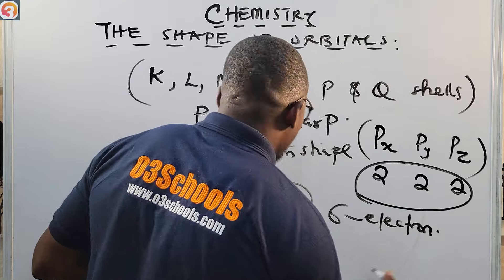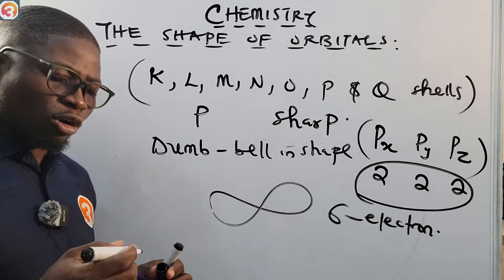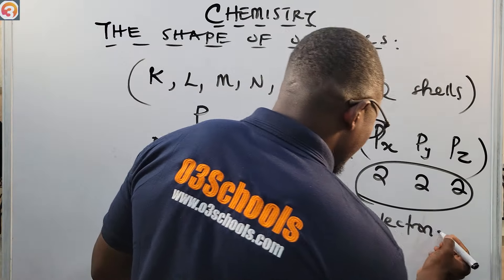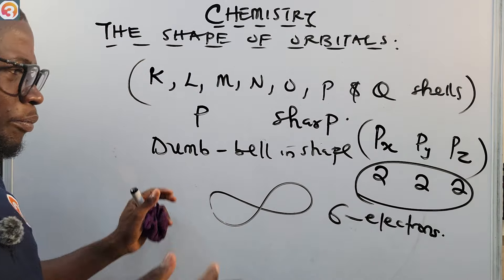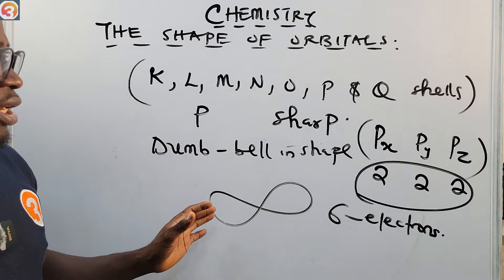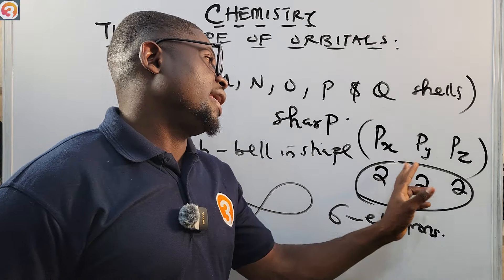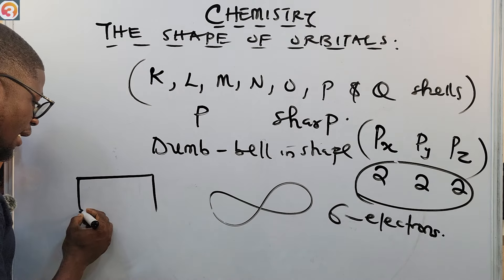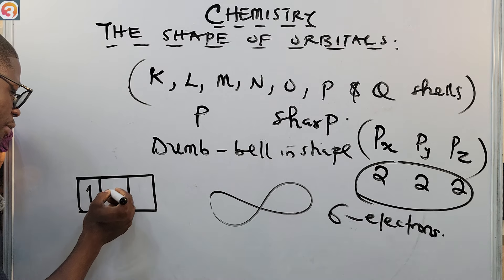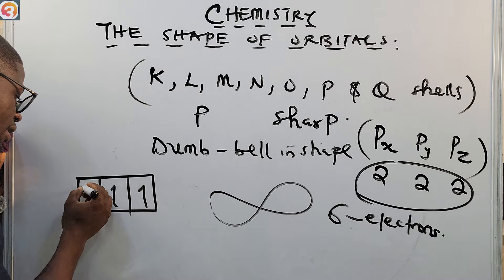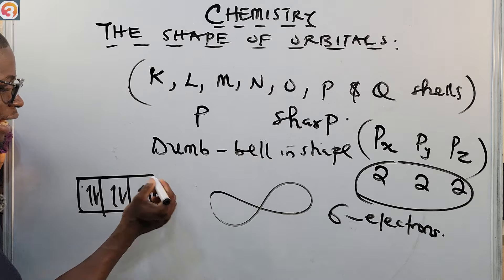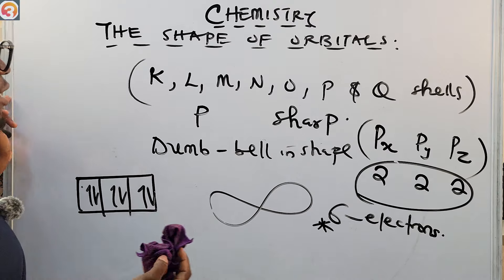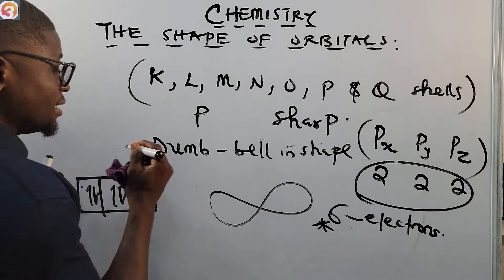Since there are three sub-orbitals (Px, Py, Pz) and each accommodates two electrons, the P orbital can accommodate a total of six electrons. When drawing an electron box diagram for the P orbital, we divide it into three boxes and fill in the electrons. The P orbital accommodates six electrons in total.